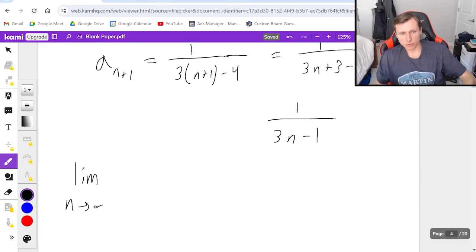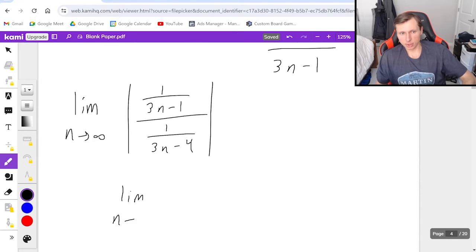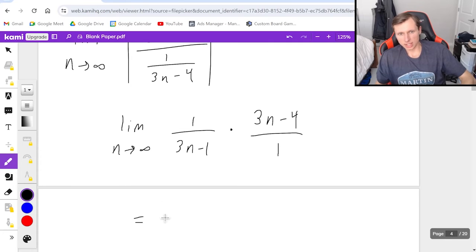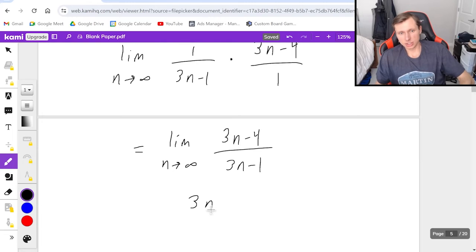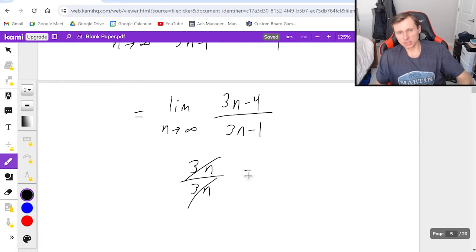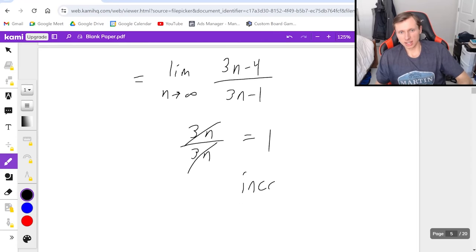I'm going to take the limit as n goes to infinity of the absolute value, which usually doesn't matter unless I have some alternating series aspect to it. But 1 over 3n minus 1 over 1 over 3n minus 4. This is a complex fraction. All I got to do is multiply by the reciprocal. So that's going to become 1 over 3n minus 1 times 3n minus 4 over 1. The result is limit n goes to infinity of 3n minus 4 over 3n minus 1. Degrees are equal, and it's 3n over 3n, which cancels to just get 1. In other words, inconclusive.